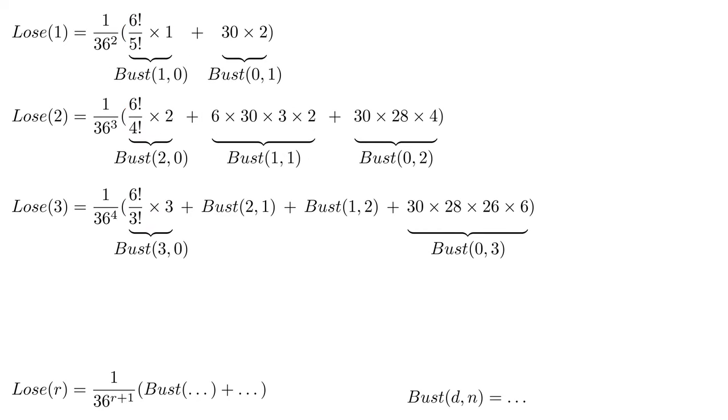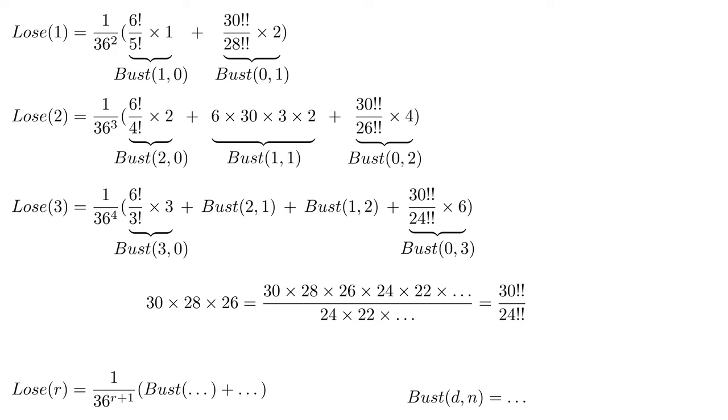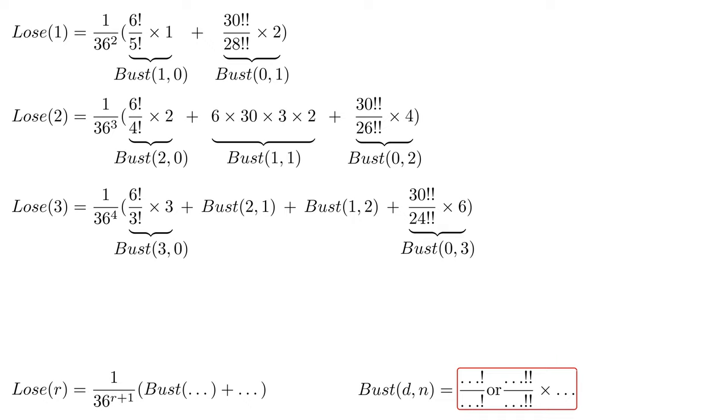We can expand bust 0, 3 in a similar way, and like the all doubles term, I notice a pattern with 30 times 28 times 26. As it turns out, this can be described using double factorials, which are like regular factorials, but decrementing by 2 each time instead of 1. Falling double factorial is not a real thing, but we could expand the falling factorial notation to have a double underline if we wanted. Like before, though, I'm going to stick to double factorial fractions. We can take this time to pencil in components that make up the bust function, some factorials or double factorials, and some other terms that we still need to figure out. Expanding these remaining two bust functions may give us more insight there. If you want to test your combinatoric skills, pause the video now and work them out.